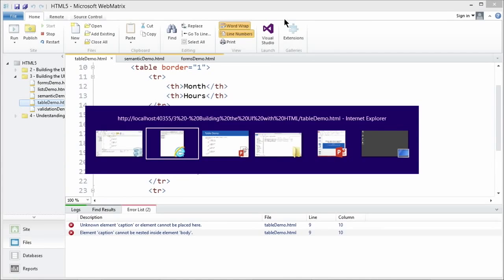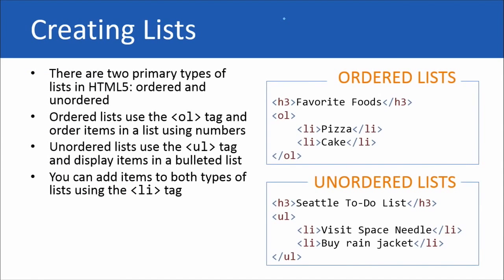All right. Back to the presentation. Lists. There are two different types of lists that we could add into our HTML documents. We've got ordered and unordered. Ordered lists use the OL tag and they order items in a list using numbers. So it's numerical order. So check out that example on the right of an ordered list of my favorite foods. Number one is pizza. Number two is cake.